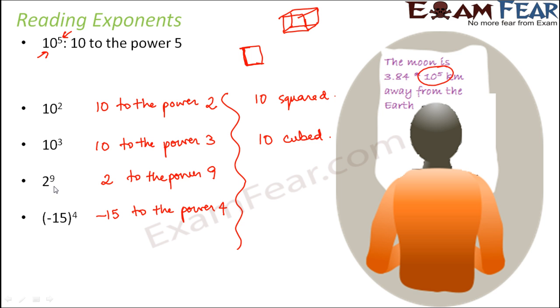What about maybe 10 to the power 4 or 2 to the power 9? How can you read this? Because it is neither squared nor cubed. So 2 to the power 9 can also be read as 9th power of 2. That means 9 is the power to 2. Similarly, can you tell me how else can you read minus 15 to the power 4? So this would be 4th power of minus 15. So these are the various ways in which you can read exponents.